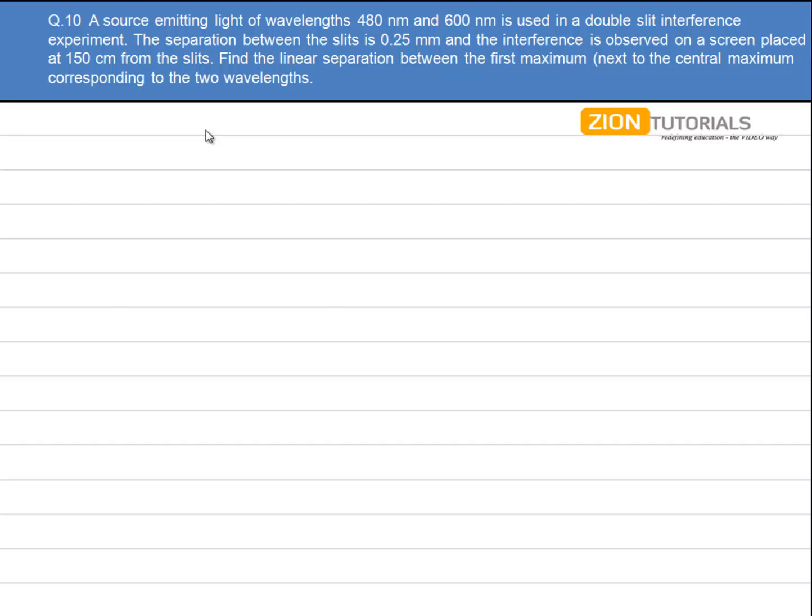A source emitting light of wavelengths 480nm and 600nm is used in a double slit interference experiment. The separation between the slits, d, is 0.25mm and interference is observed on a screen placed 150cm from the slits. Find the linear separation between the first maximum next to the central maximum corresponding to the two wavelengths.